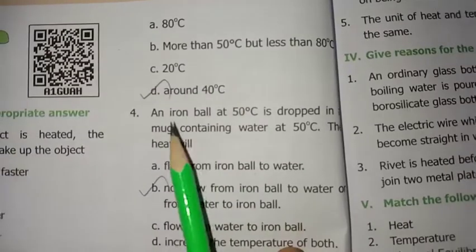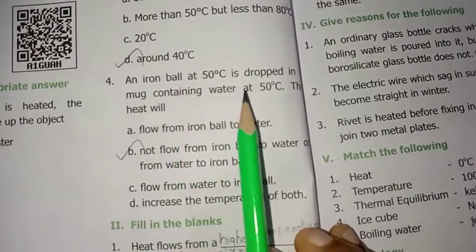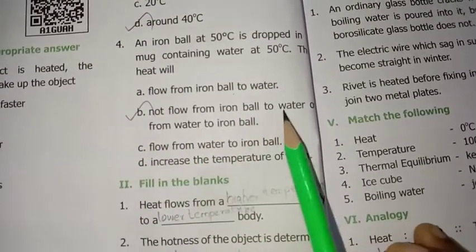Fourth, an iron ball at 50°C is dropped in a mug containing water at 50°C, the heat will B, not flow from iron ball to water or from water to iron ball.